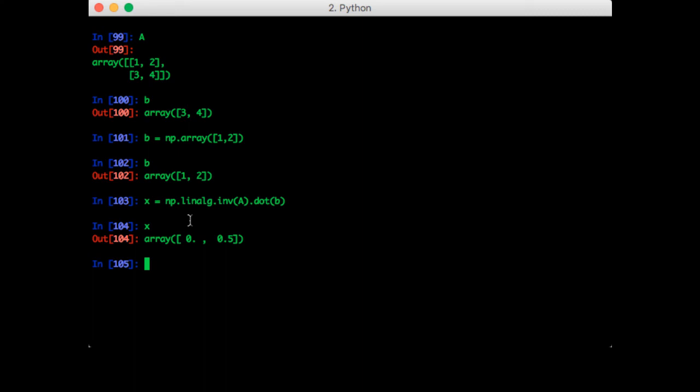Now of course since this is such a common operation in NumPy there is a better way to do it. It's a function that is appropriately named solve. So we call it np.linalg.solve, we pass in a and we pass in b. So we get the same answer.